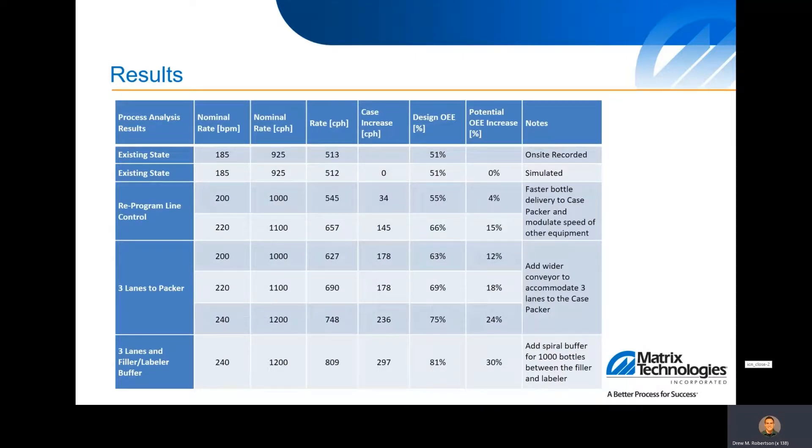And then this is the results page of some of the simulations we did. The first simulation we did was just to compare our model to what we saw on site. Got the same OEE number with that 9% reduction that we used to account for bad product rework and some of the availability issues that's not captured in the TRACSIS data.